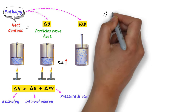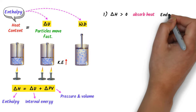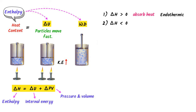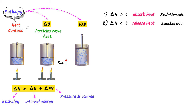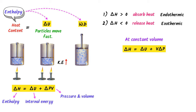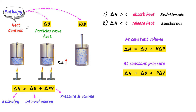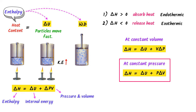Remember that if ΔH is positive, the process absorbs heat from the surroundings and it is called an endothermic process. If ΔH is negative, the process releases heat to the surroundings and it is called an exothermic process. Also, there are two ways to write enthalpy change: at constant volume, ΔH = ΔU + VΔP; while at constant pressure, ΔH = ΔU + PΔV. We use the constant-pressure equation in most cases because atmospheric pressure is constant.